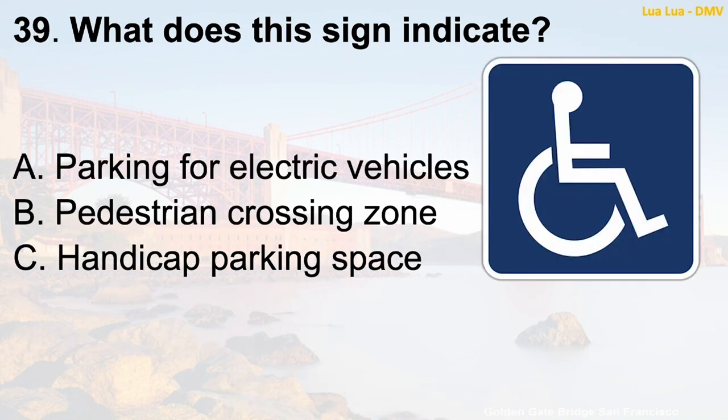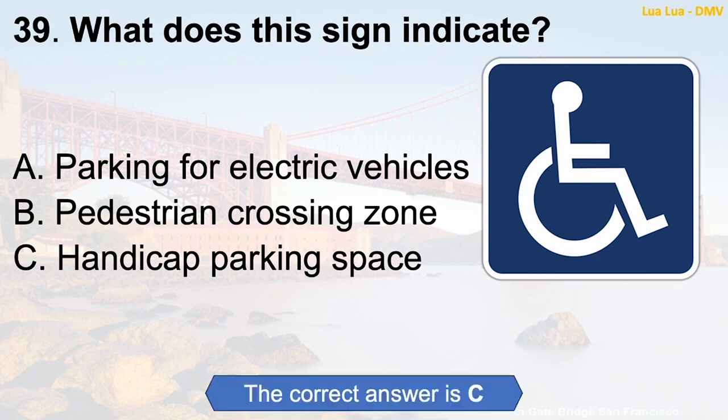Question 39: What does this sign indicate? A. Parking for electric vehicles. B. Pedestrian crossing zone. C. Handicap parking space. The correct answer is C: Handicap parking space.